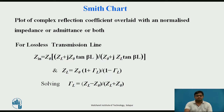What is meant by the Smith chart? The Smith chart is the plot of the reflection coefficient, and the reflection coefficient is a complex number. This plot is overlaid with the normalized impedance or normalized admittance, all plotted on the same graph — the reflection coefficient with impedance, or the reflection coefficient with admittance.